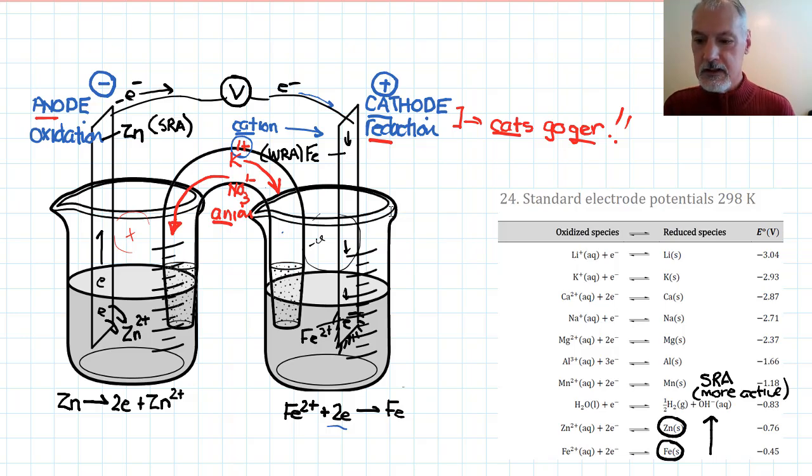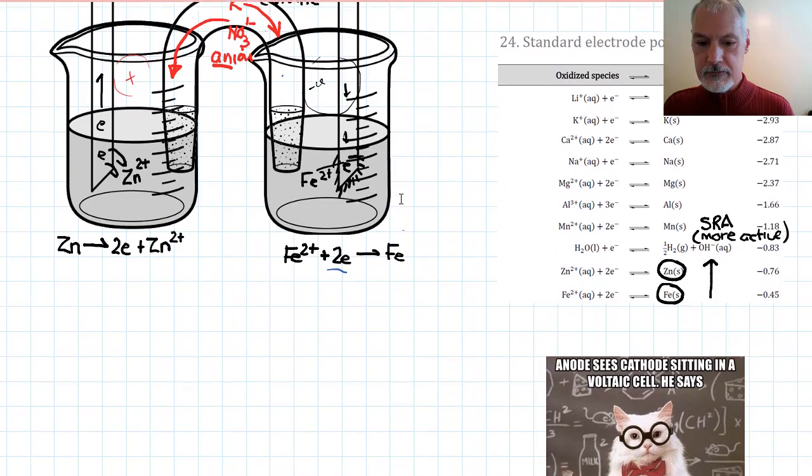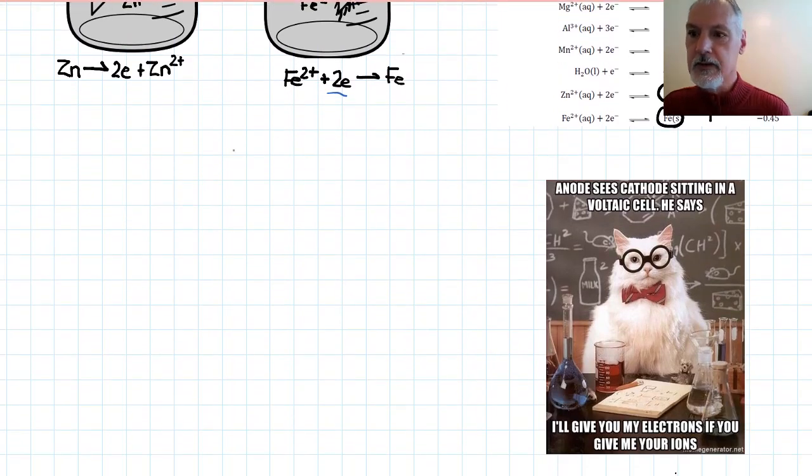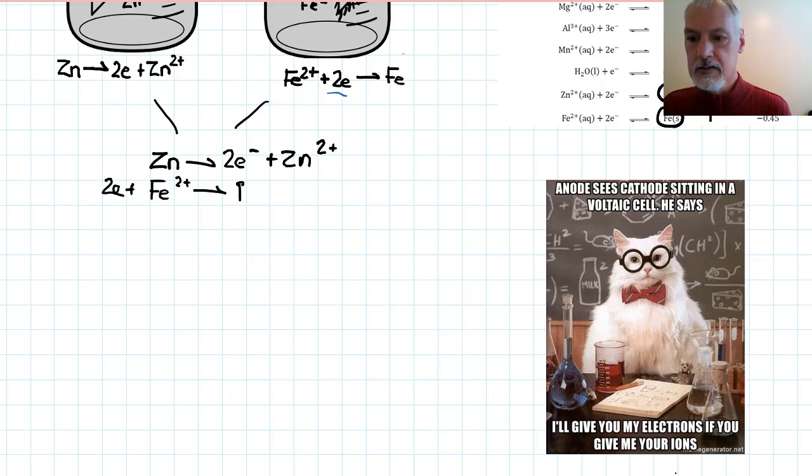Now, we can summarize these two reactions, putting them together. So let's take these two and come up now with the overall reaction. So I've got zinc and two electrons forming zinc 2+ ions. And at the same time, I have Fe2+ forming, plus two electrons, forming iron.